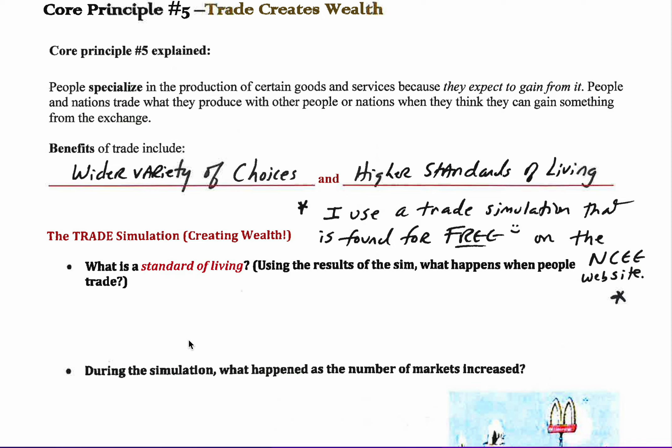Take the United States — the average family income is around $50,000 US dollars. That might not sound like a lot, but compare that to a country like Rwanda, where the average family income might be $785 for the year. There's going to be a very big difference in how people live, because people in Rwanda don't have a lot of money.